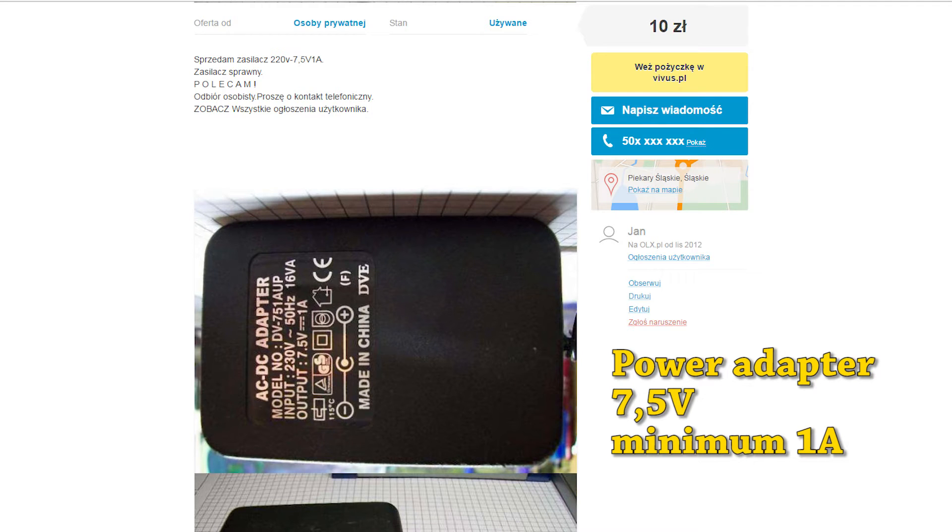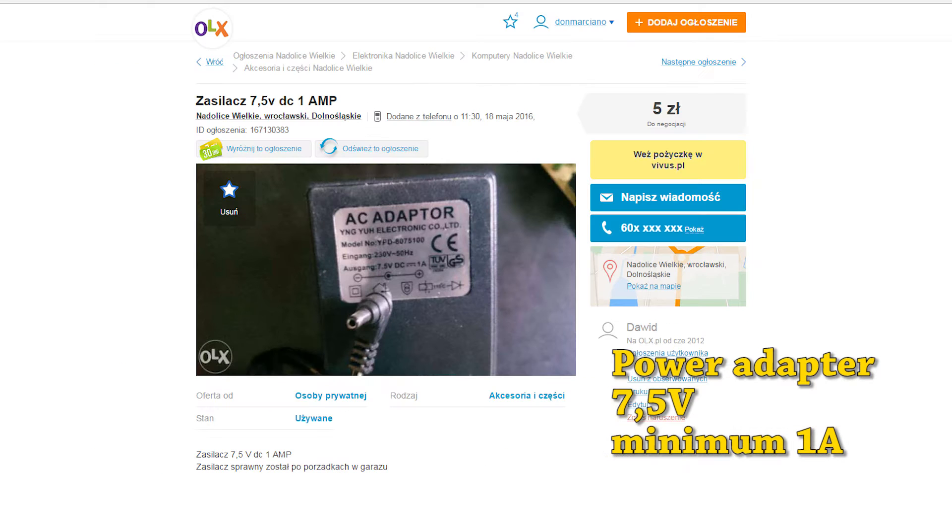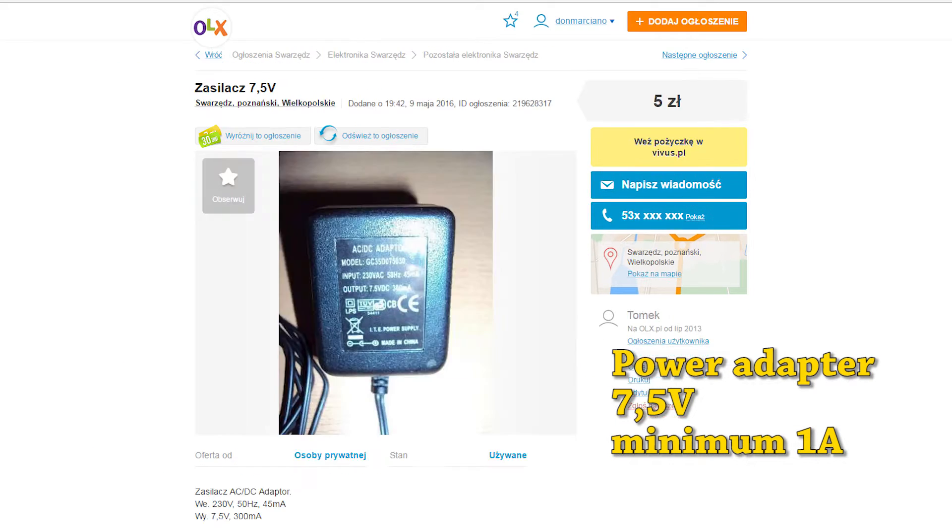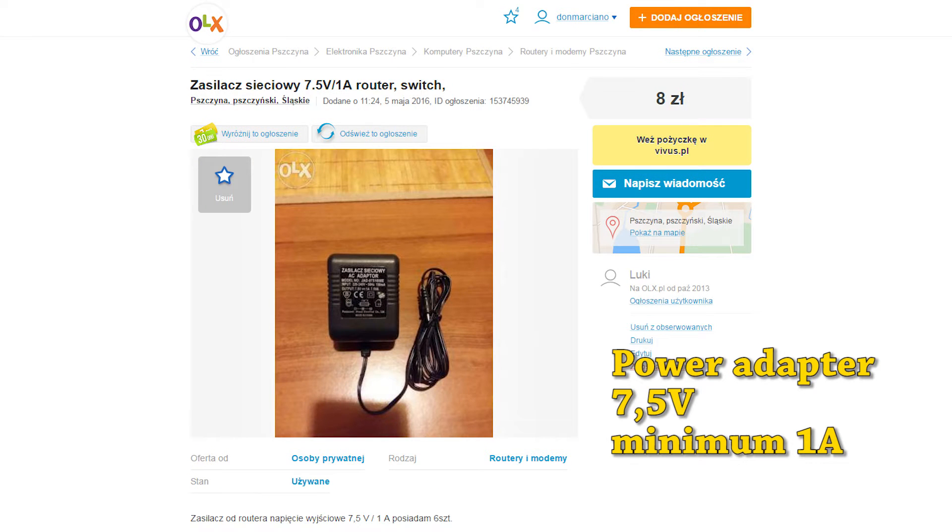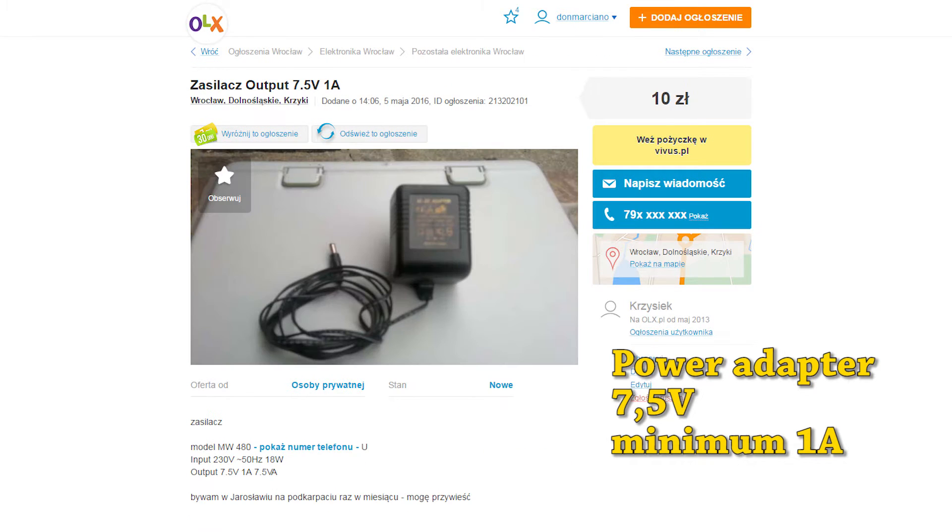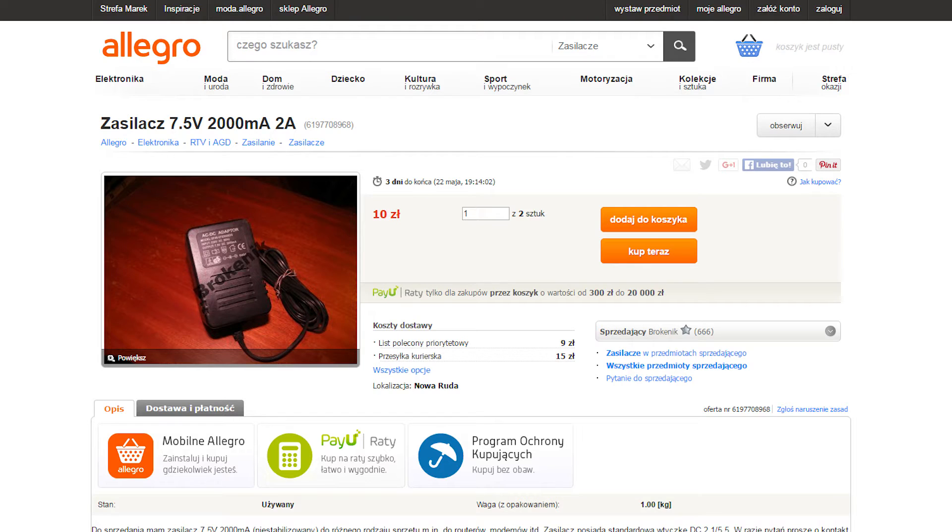All you need is a common power adapter with 7.5V and minimum 1A. The prices for used adapters are between $1 and $2, so they're very cheap. You can choose 8V if you want, but then you need to lower the output voltage. Later I'll show you how to do it. The most important thing is that it should have at least one amp. Two amps will be just perfect.